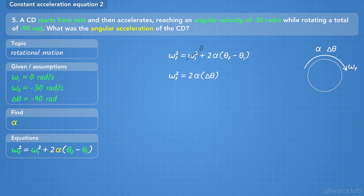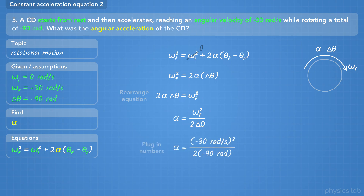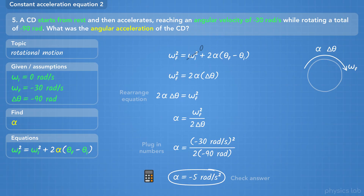Now our equation is simpler. We rearrange to isolate alpha by swapping sides and dividing by 2 delta theta, then plug in the numbers. We get negative 5 radians per second squared for the angular acceleration of the CD. The CD starts with 0 velocity, then ends with a negative velocity, so the direction of the acceleration should be negative — which is what we got.